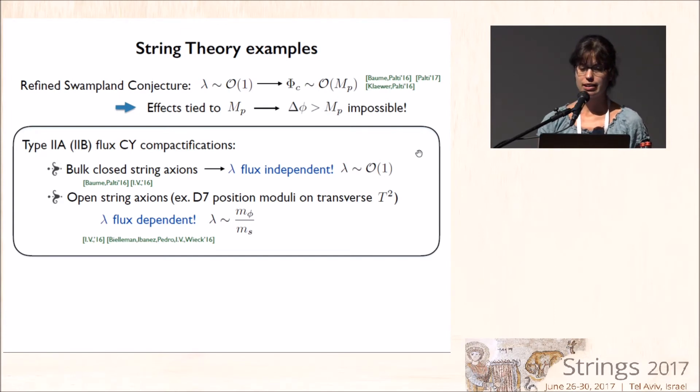And well, we get that this logarithmic behavior always appears, and it's quite remarkable that for axions that belong to the closed string sector, the lambda corresponding to this variation is always of order one, and it's independent of the fluxes. So in this case, it's true that the back reaction effects always become important at the Planck scale, and we cannot have an effective theory valid for a transplanckian field excursion.